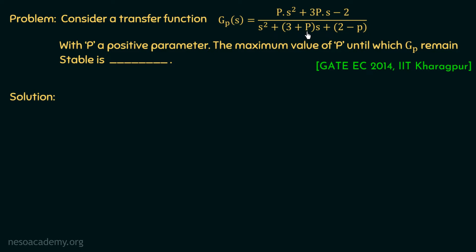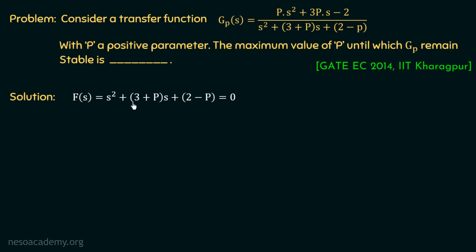The characteristic equation is s² + (3 + P)·s + (2 − P) = 0, obtained by setting the denominator equal to zero. We can directly use the denominator because this is the overall closed-loop transfer function. If it were an open-loop transfer function, we would apply the formula 1 + G(s) = 0. But here, the characteristic equation is directly s² + (3 + P)·s + (2 − P) = 0.